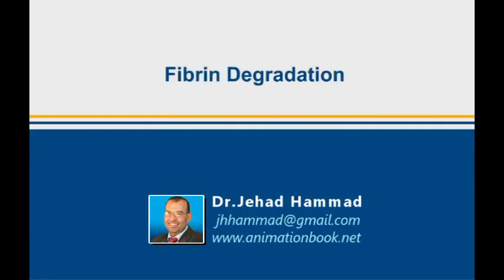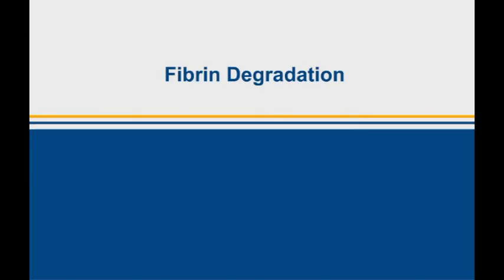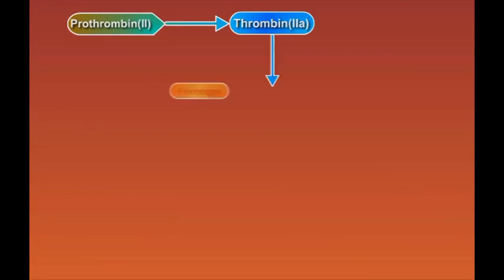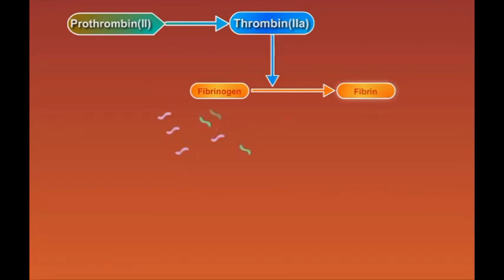Fibrin degradation. Prothrombin, which is a blood clotting factor, is converted to thrombin via intrinsic or extrinsic clotting pathways. Thrombin, in turn, catalyzes the hydrolysis of fibrinogen molecules to fibrin. Subsequent cross-linking of fibrin occurs, resulting in clot stabilization.